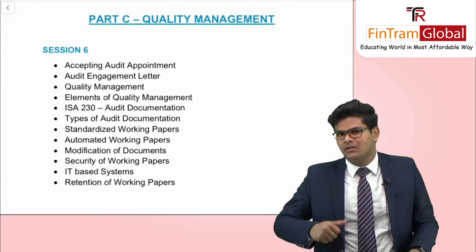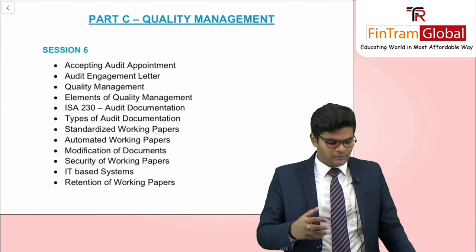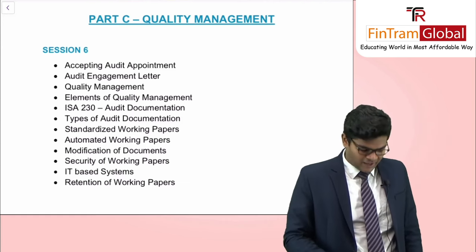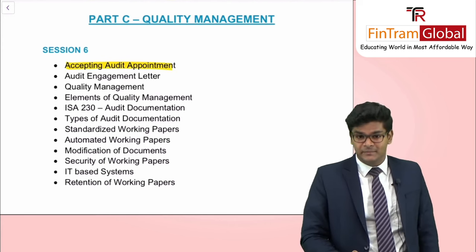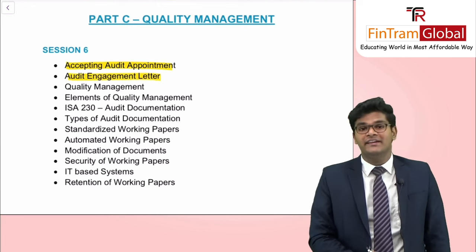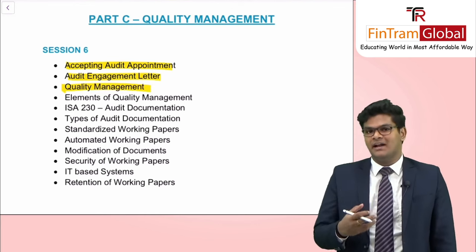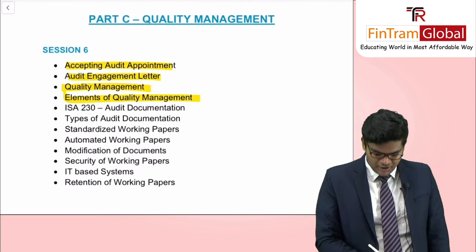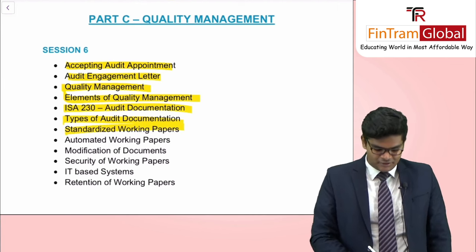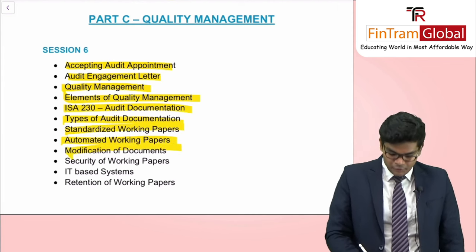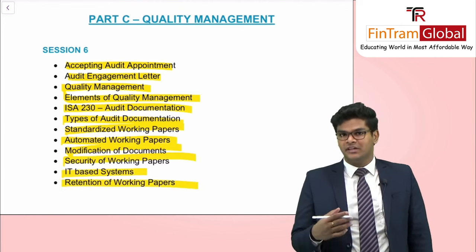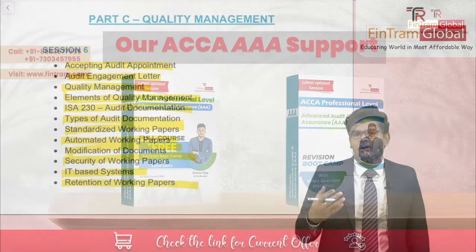So what is quality management all about? What topics do we have to look at in this syllabus area? It's a small syllabus area. First, we have accepting audit appointments, then the audit engagement letter, concepts and elements of quality management, ISA 230 audit documentation, types of audit documentation, standardized work papers, automated working papers, modifications of documents, security of work papers, IT-based systems, and retention of working papers.